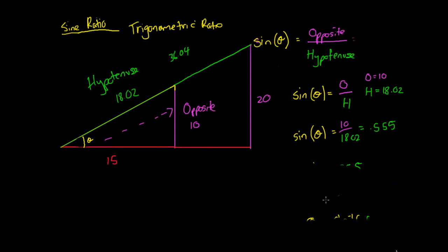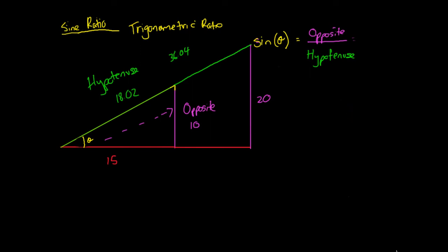We do have a way to remember this. If we're wanting to work out the sine ratio: sine is equal to the opposite side divided by the hypotenuse. Someone came up with a rhyme — the first part is the sine ratio. The sine ratio, with a big S, is the opposite side O divided by the hypotenuse. So when thinking about the sine ratio, we say: Sine is Opposite over Hypotenuse — SOH.